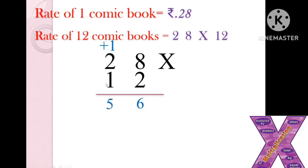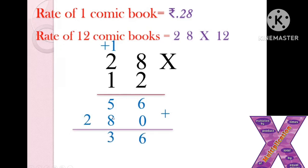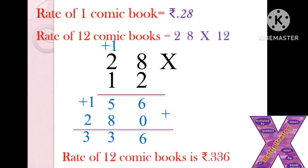Now we multiply by 1. Since 12 means 10 plus 2, we've completed multiplying by 2. Now we multiply by 10 — we add 0 in the ones place, then multiply as usual: 1 times 8 is 8, 1 times 2 is 2. Then we add: 6 plus 0 is 6, 5 plus 8 is 13 — write 3, carry 1 — 2 plus 1 is 3. So the answer is 336. The rate of 12 comic books is 336 rupees.